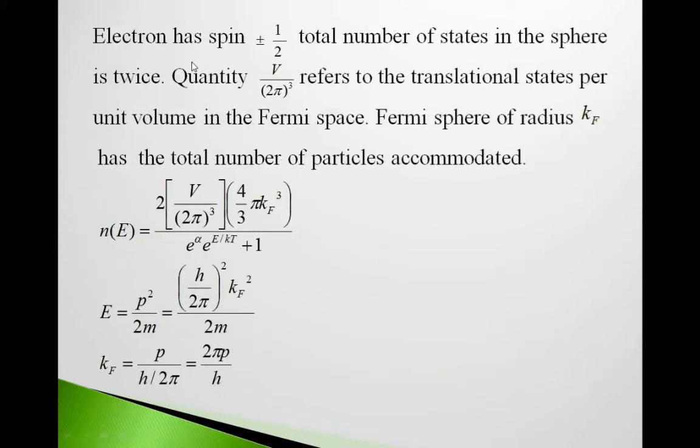Electron has spin ±1/2, so total number of states in the sphere is twice. Quantity V/(2π)³ refers to the translational states per unit volume in the Fermi space. Fermi sphere of radius kF has the total number of particles accommodated.